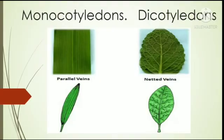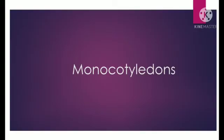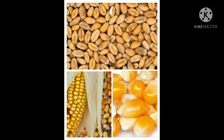In monocotyledon plants, the leaves have veins that run parallel to one another, while dicotyledon plants have veins arranged in a branched network. You can see in this picture the parallel veins and the branched netted veins.